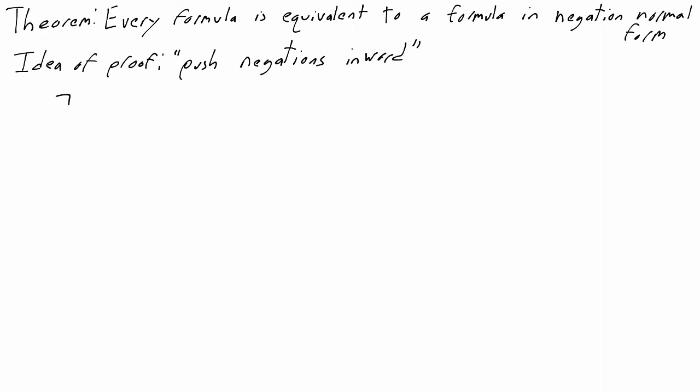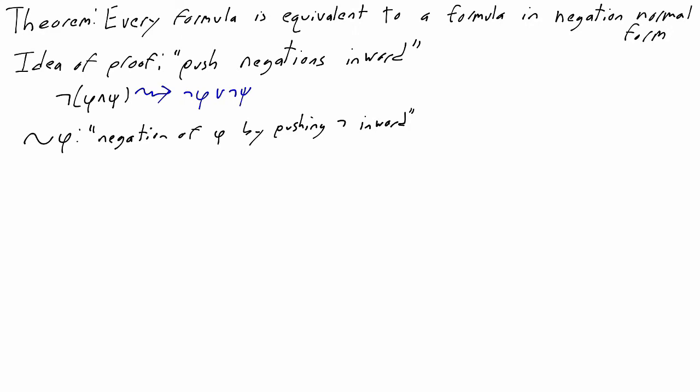So if you have not phi and psi, you should rewrite it to not phi or not psi. And then if phi isn't atomic, you should rewrite phi as well. Formally, we're going to define an operation which we write like this — the squiggly negation. And it's like negation; in particular, squiggly phi should be equivalent to not phi. But squiggly negation pushes the negation inside towards the atomic formulas, rather than just sticking a negation on the outside of the formula.